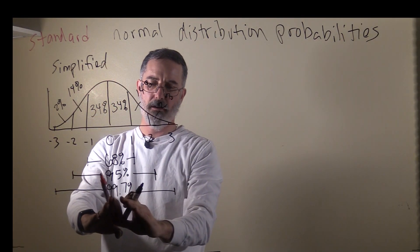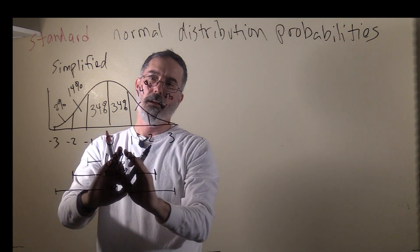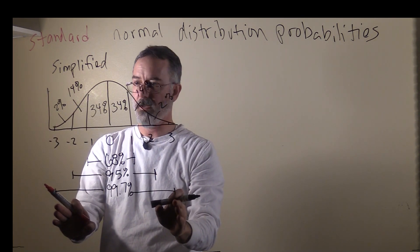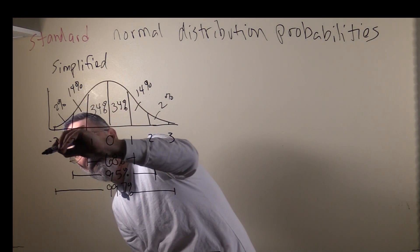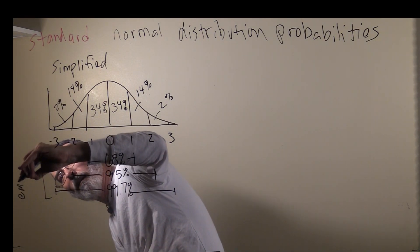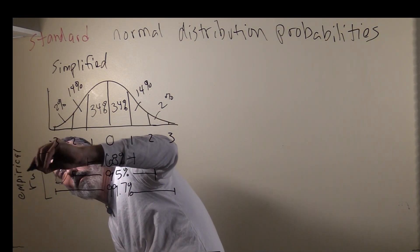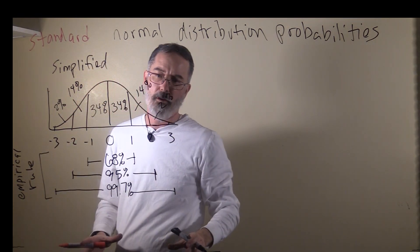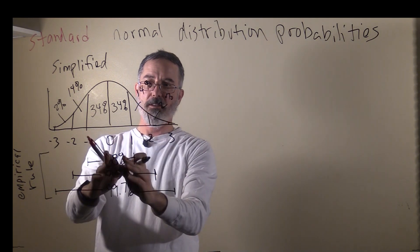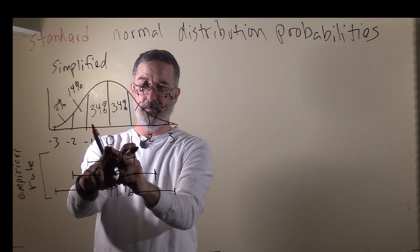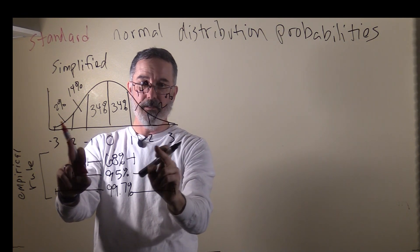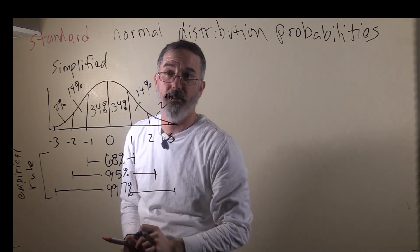That means that almost the whole area under a normal distribution is within three standard deviations. What I've drawn here is sometimes called the empirical rule. This is kind of a rule of thumb to give you a sense of, with a normal distribution, where do most of the scores lie. Almost 70% are within one standard deviation from the mean either way. 95% are within two standard deviations, and almost 100% are within three standard deviations.